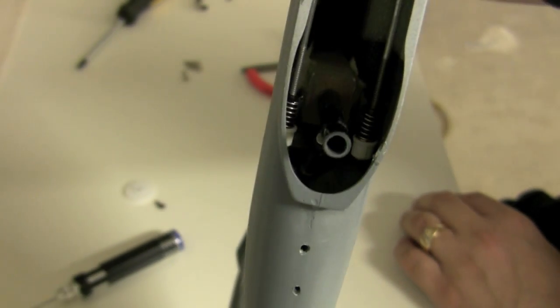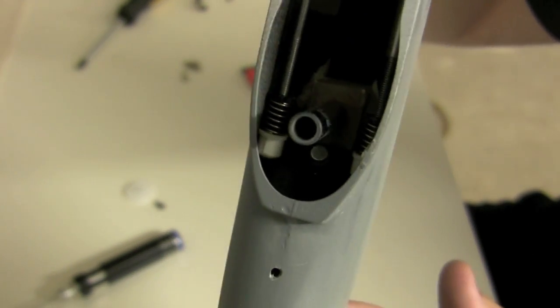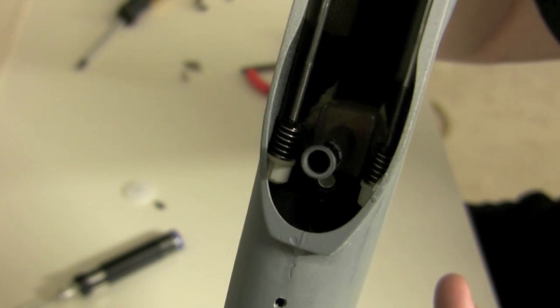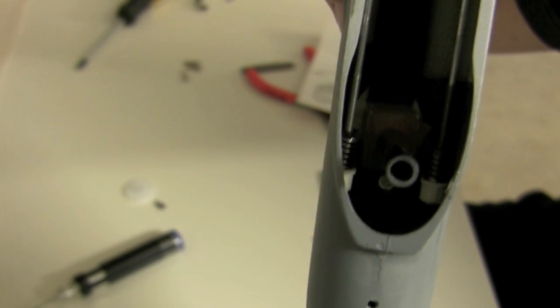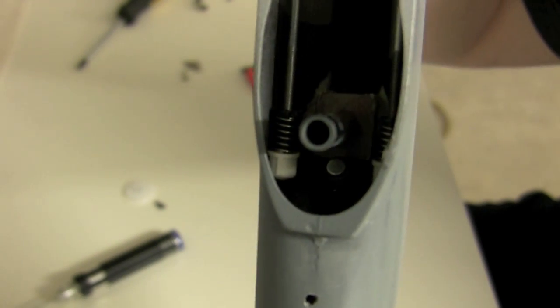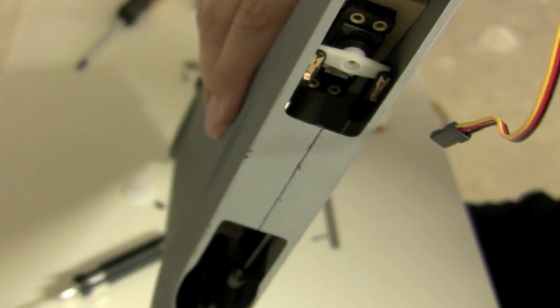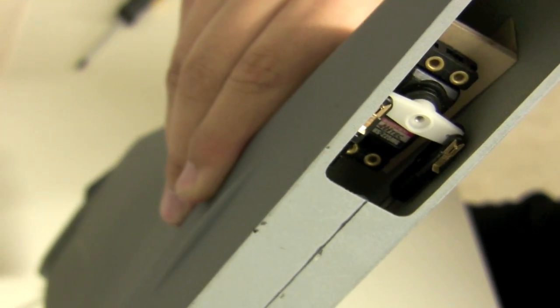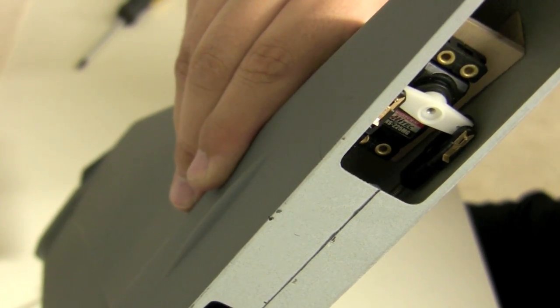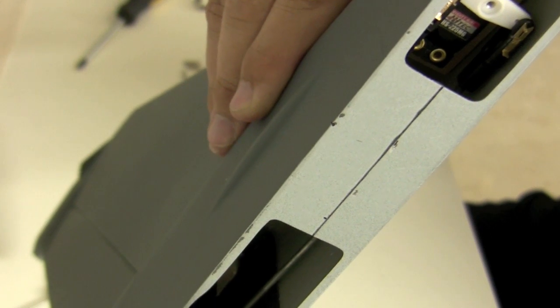But other than that, everything moves the way it's supposed to. Nothing really binds or anything like that. You can kind of see in there the ball mounts - they do just barely brush up against the sides there. I sanded it down a little bit, but it doesn't hold it up or anything. It just barely brushes, and unfortunately that's the widest point of the travel there. So that's where we're at. I'm gonna go ahead and take out that servo and switch it around, and then I'll be able to glue everything in.